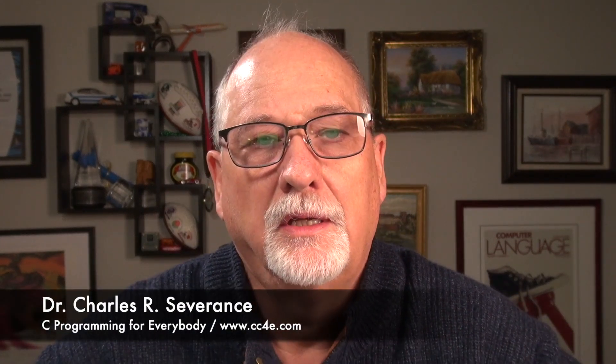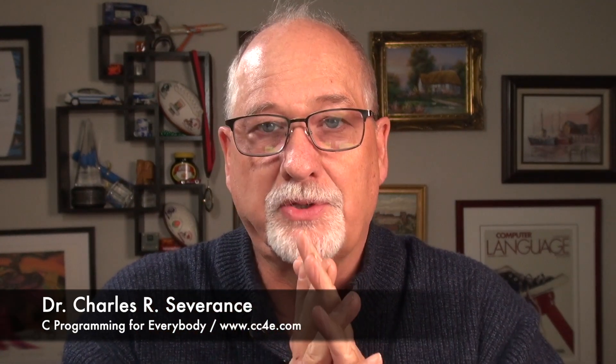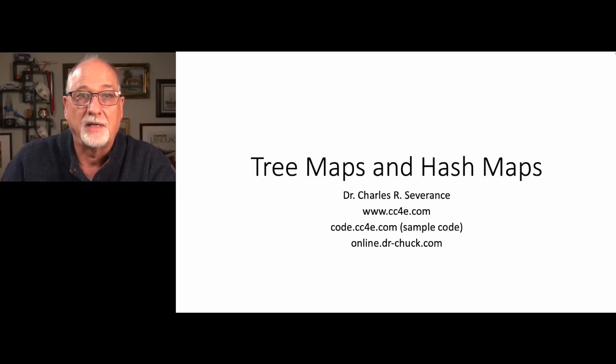Hello, and welcome to the last lecture in this course. We're going to talk about tree maps and hash maps. Up until now we've built a map abstraction, we've looked at how iterators work, we've created a linked list implementation of the hash abstraction, and now we're going to build a hash version and a tree version of that same thing.